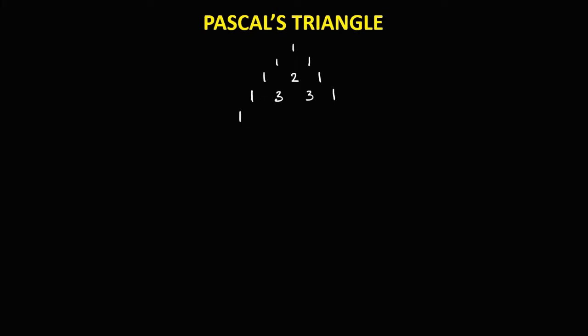Then we have 1, add these 2 numbers: this one is 4, this is 6, then 4, then 1. Then we have 1, so 1 plus 4 is 5, 4 plus 6 is 10, 6 plus 4 is 10, and 4 plus 1 is 5, then 1. So if you want to continue, just follow the process: starts with 1, add these 2 numbers, and ends with 1.